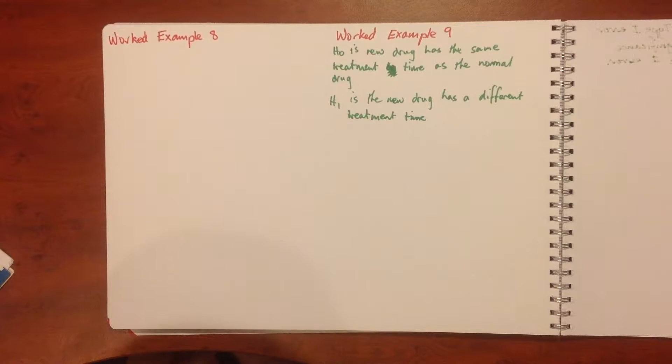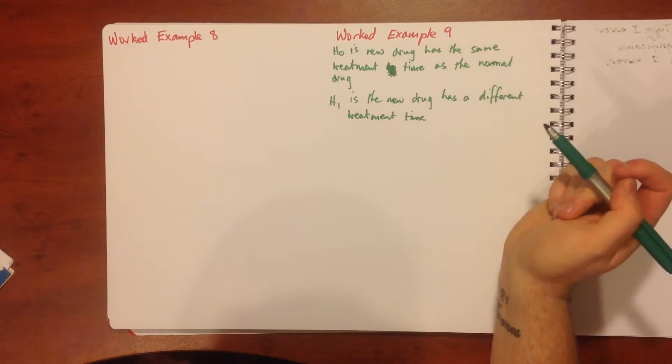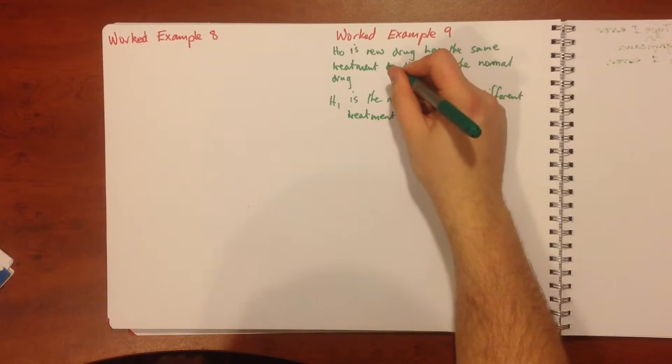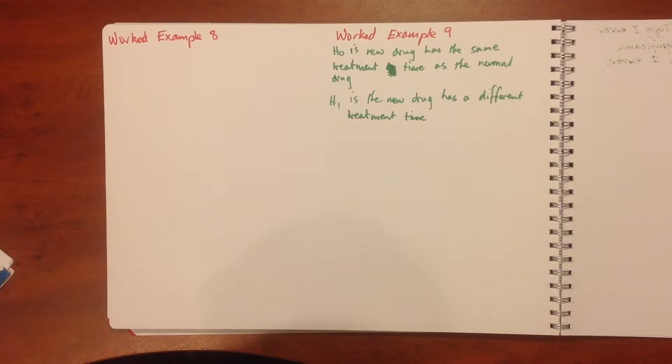A type 2 error means that the null hypothesis was accepted when it was actually false. That means our null hypothesis was accepted and we said that the new drug has the same treatment time as the normal drug when in fact it doesn't. That's our idea with those worked examples.